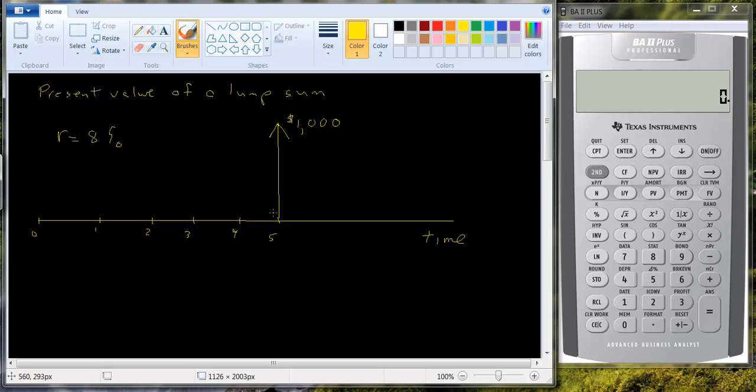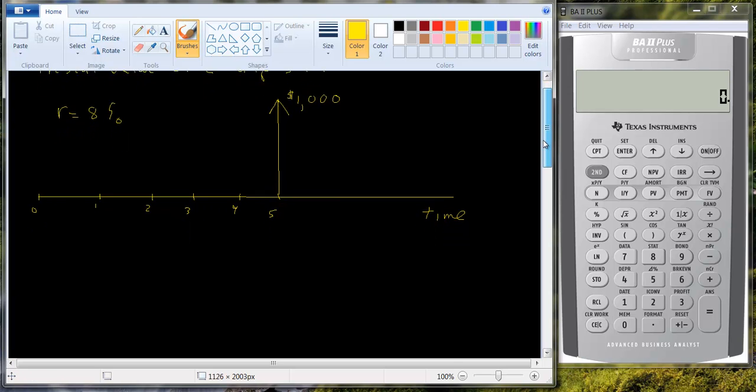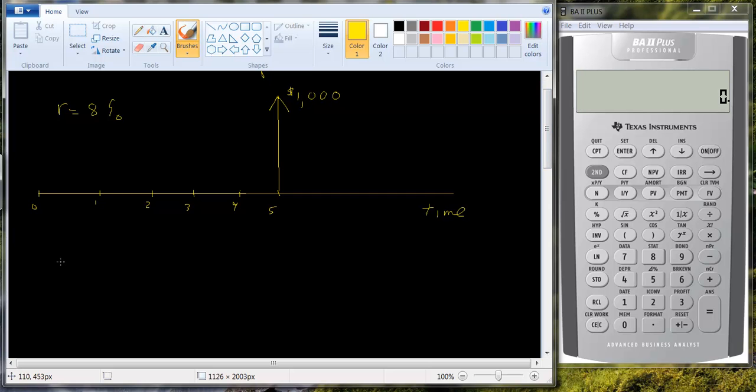Now when the money is five years away, we're going to have to bring it back five periods. Actually, if you recall the tutorial that we had on future value, remember the future value in time period n was equal to the present value times one plus the interest rate raised to the nth power.